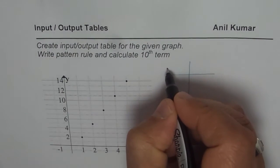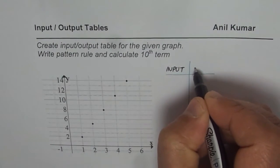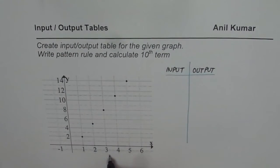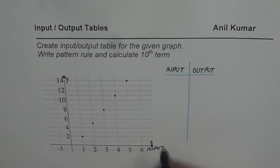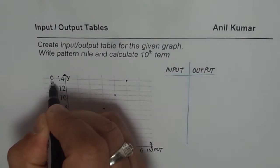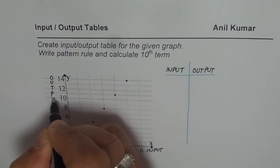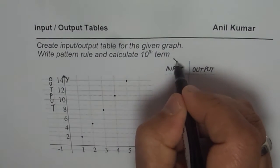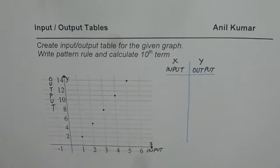So let us say input is always on our left side, so that is input and output. Input will always be along the x-axis, so this is input for you. This is input and that one is output. So this y belongs to output. So x is always input for us and y is output.